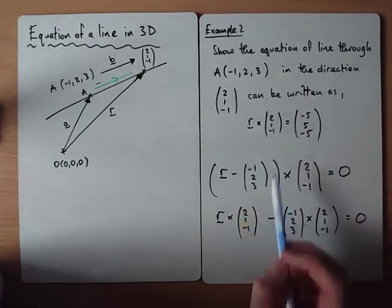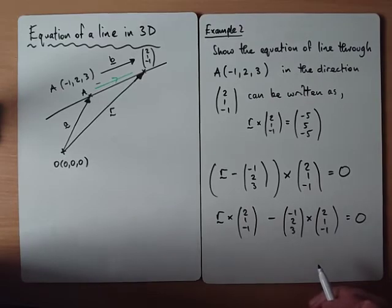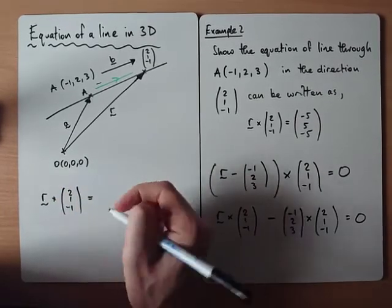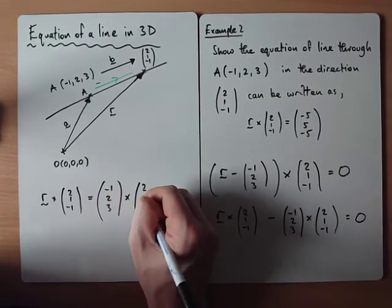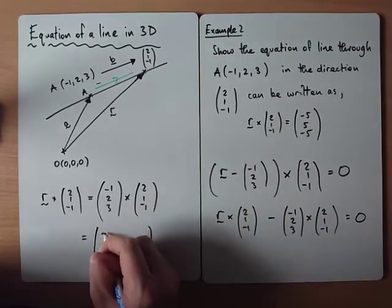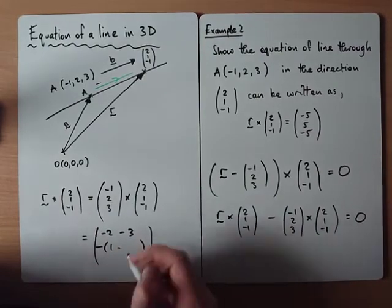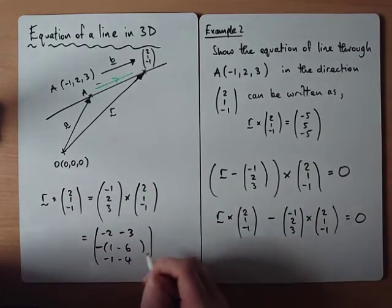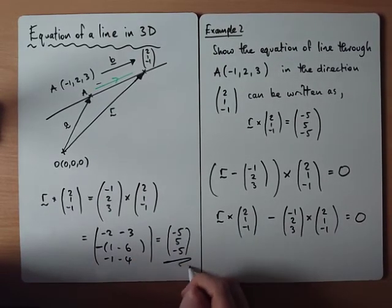Hopefully it should give us this answer on the right-hand side. So we get R cross (2, 1, -1) equals (-1, 2, 3) cross (2, 1, -1). So covering off, we get -2, -3, minus 1, minus 6, and -1, minus 4, which gives us -5, 5, -5.